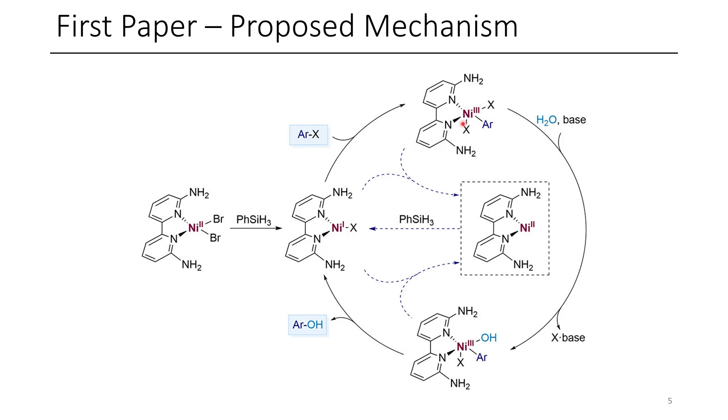Now, it's possible that once the nickel(III) catalyst is formed, that this can disproportionate with some of the nickel(I), and this would reform the nickel(II) catalyst. So it's necessary to have some phenylsilane to make sure that nickel(I) is constantly being formed so that the reaction is able to occur. This is an air-sensitive technique that needs to be done under nitrogen, and this is one of the reasons why. Nickel(I) is involved in this reaction, and the authors confirm this by EPR.